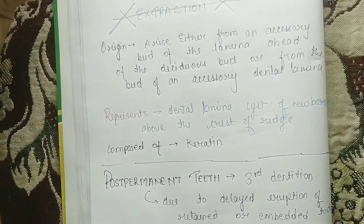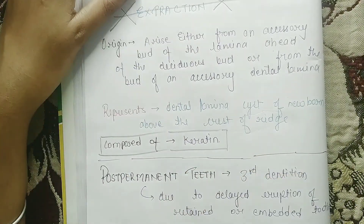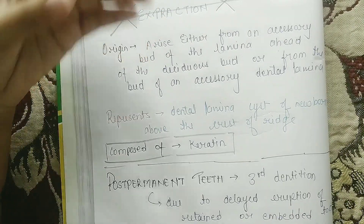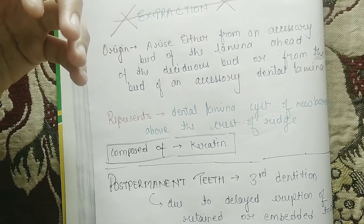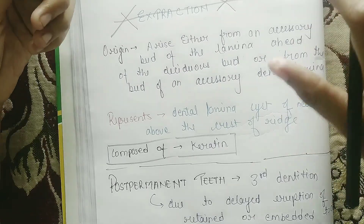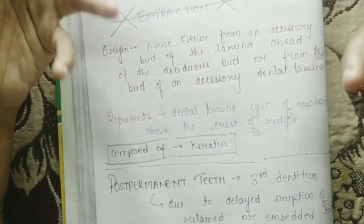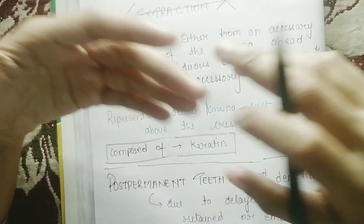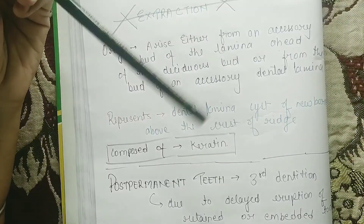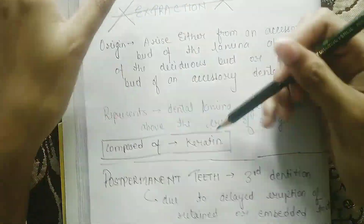The dental lamina origin: it arises either from an accessory bud of the dental lamina ahead of the deciduous bud. It is composed of keratin — this is a unique point. In pre-deciduous dentition, unlike normal dental tissue such as enamel or dentin, it is made of keratin.